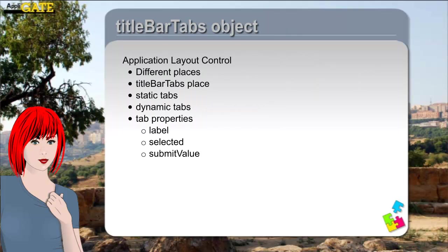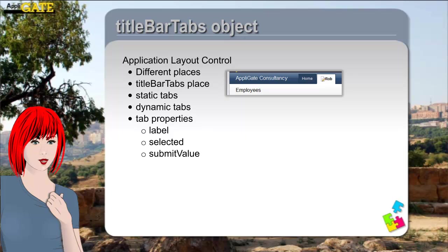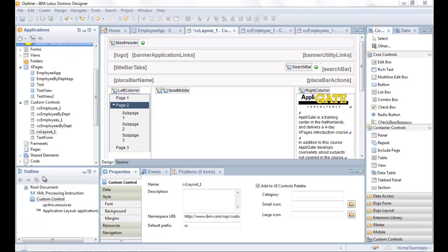The application layout control has several places defined where you can use controls to customize the application layout. One of the places is the Title Bar Tabs place. This place is used for a description and one or more links or containers for links — the links will be displayed as tabs in the bar. We will first show you how to define a static tab, and also explain which properties of the tab we use in our application.